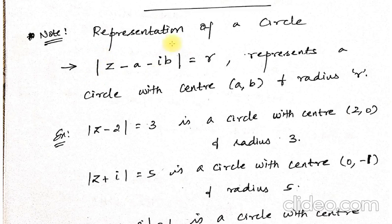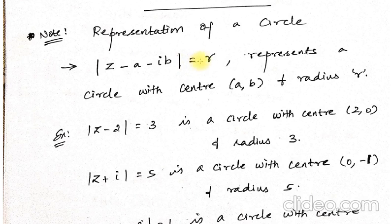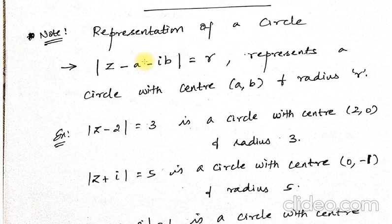Consider: modulus of (Z minus A minus iB) = R. Whenever there is a modulus with Z together with a complex constant, and a real number on the right-hand side, it represents a circle with centre (A, B). The real part inside is minus A, so the centre's x-coordinate is the negative of that real part; similarly the y-coordinate is the negative of the imaginary part. The radius is simply the right-hand side value R.